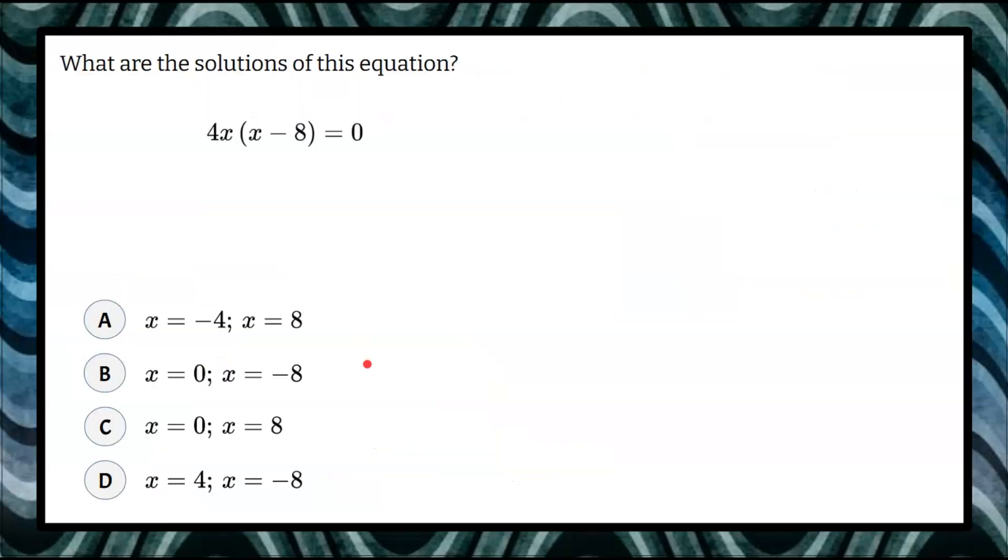Here's our question today. We're asked, what are the solutions of this equation? 4x multiplied by the quantity x minus 8 equals 0. You're given four answer choices.